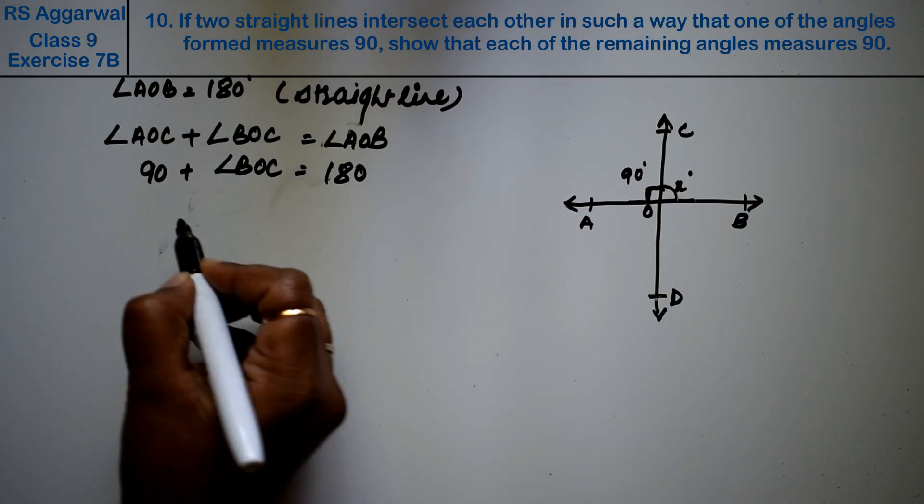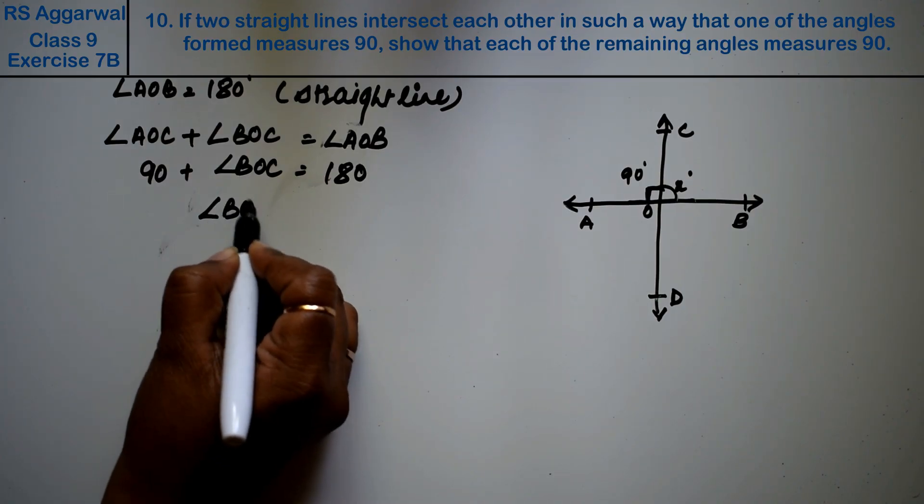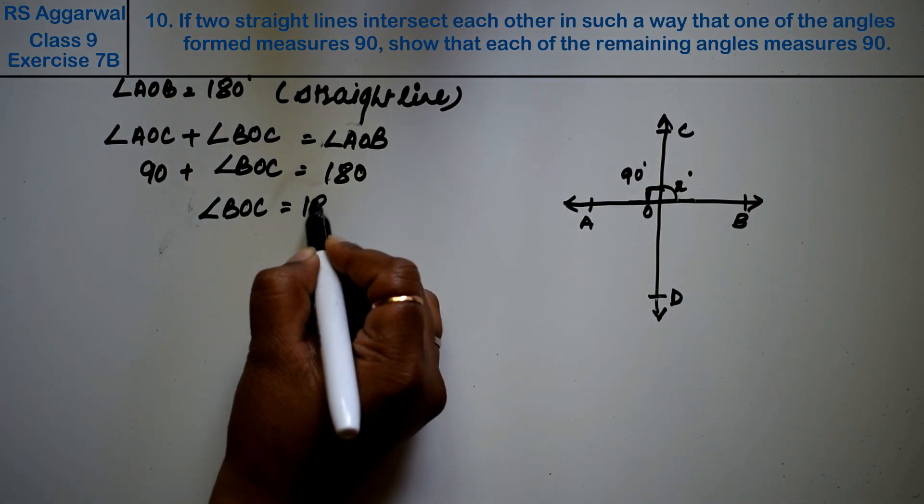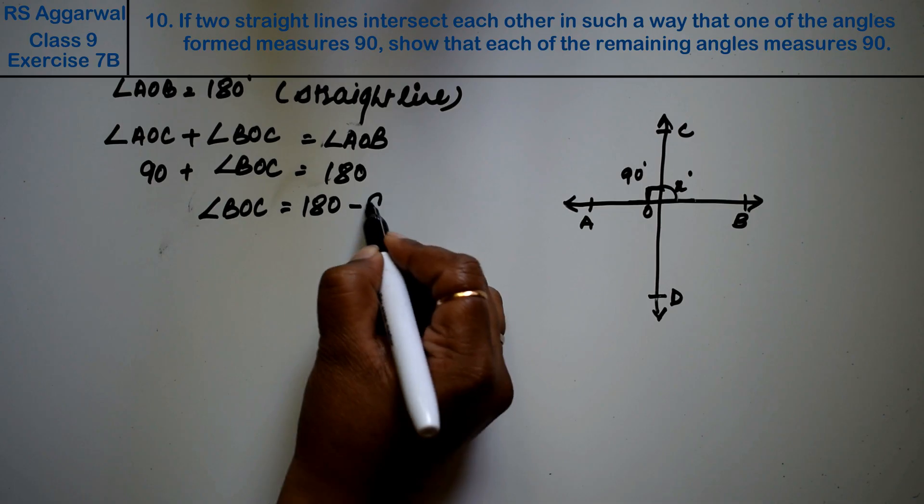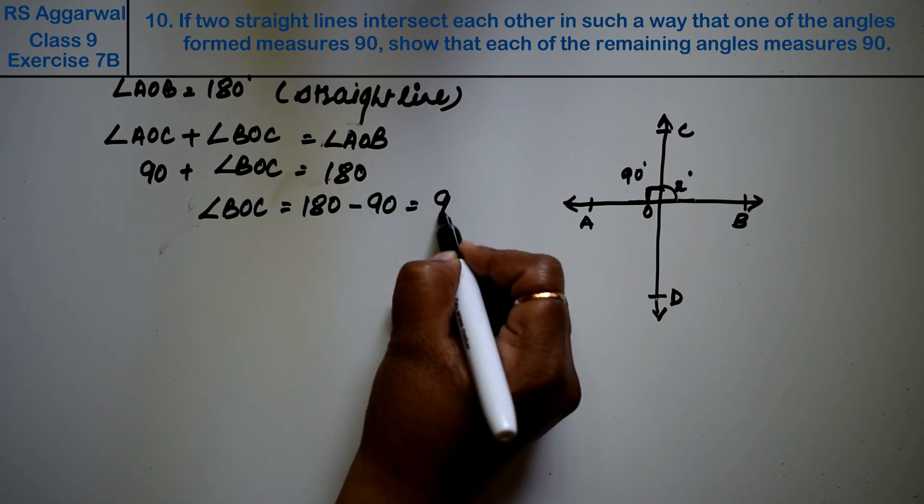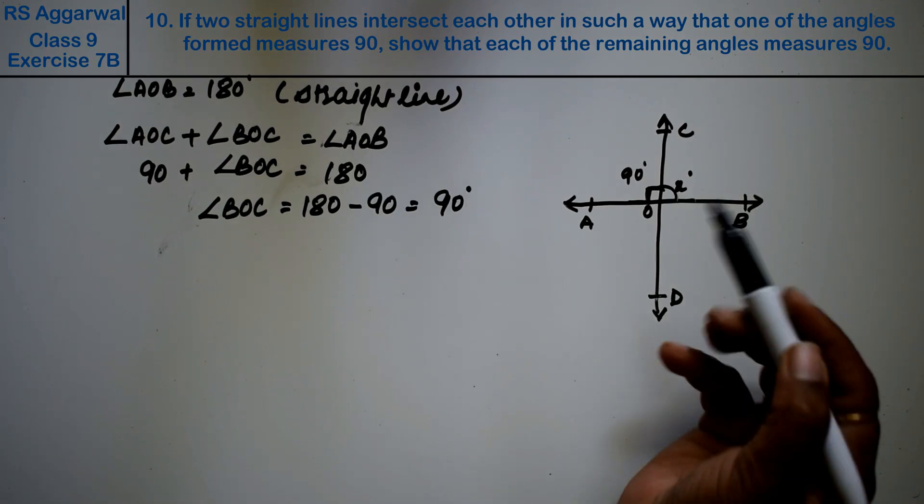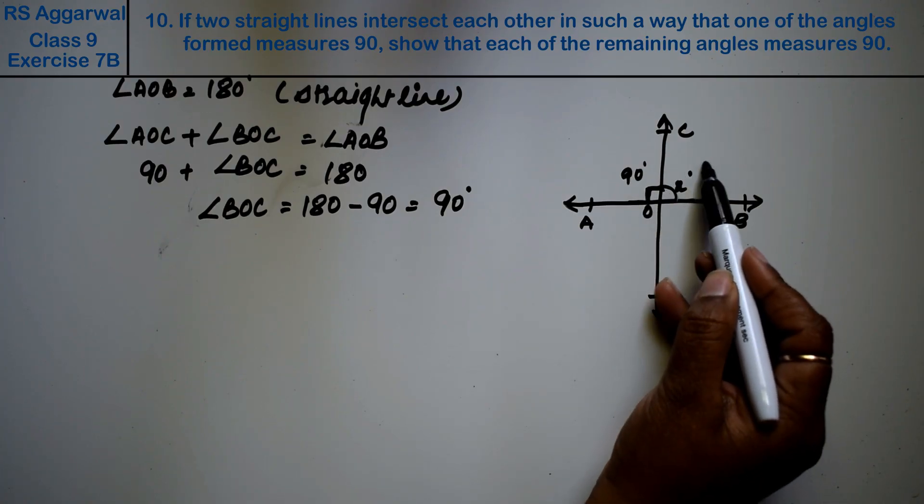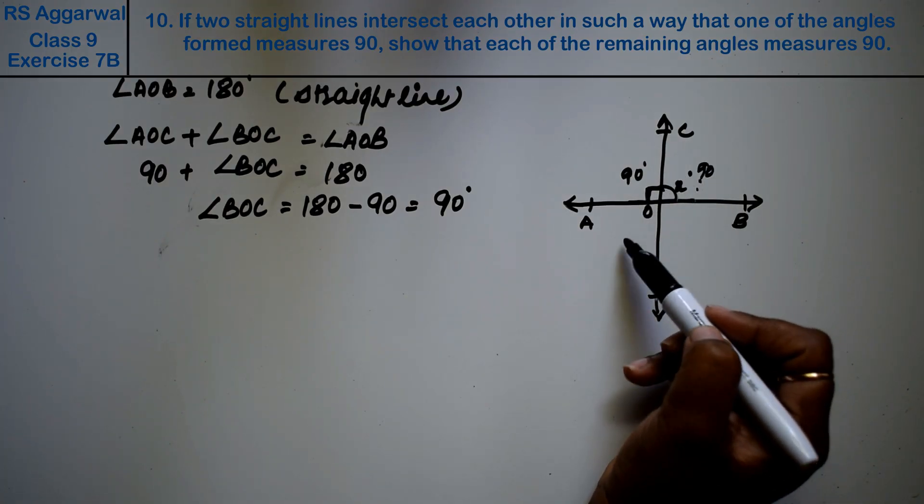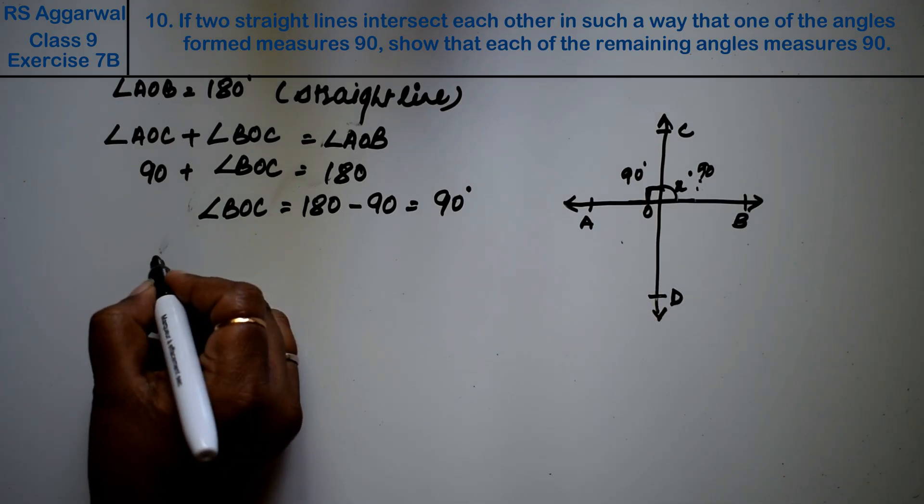So this equals 180. Therefore angle BOC becomes 180 minus 90, which equals 90 degrees. Now as we got 90 here, since they're intersecting, opposite angles are equal.